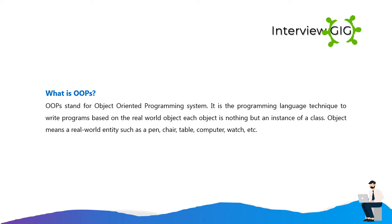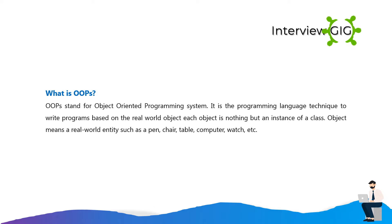What is OOPS? OOPS stands for object oriented programming system. It is the programming language technique to write programs based on real world objects. Each object is nothing but an instance of a class. Object means a real world entity such as a pen, chair, table, computer, watch, etc.